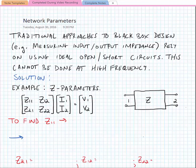Okay, in this lecture we're going to start talking about network parameters. Network parameters are something that we traditionally use to describe what might have been called a black box, so there were approaches to black box design.